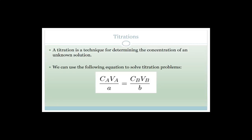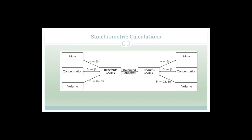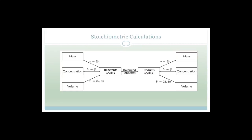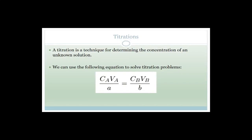What we are going to do is go through a whole bunch of different examples, then stoichiometric calculations, and then we'll go through some exam paper questions. So this is one of the formulas that you can use. The formula that you actually get given on your formula sheet says C_A V_A over N_A is equal to C_B V_B over N_B.